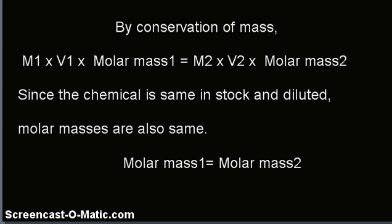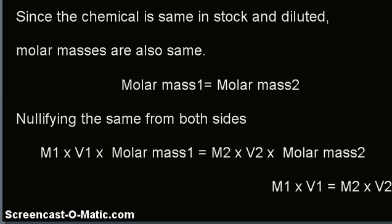By conservation of mass, mass 1 equals mass 2. But since the chemical is the same in the stock as well as the diluted solution, the molar mass is also the same. Cancelling molar mass from both sides, we get M1V1 = M2V2. The mass in the original stock and the mass in the final dilution should match, and that is why we use the formula M1V1 = M2V2 to do these calculations. Thank you very much.